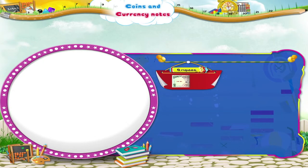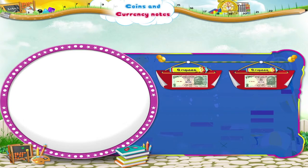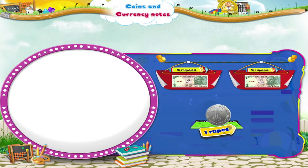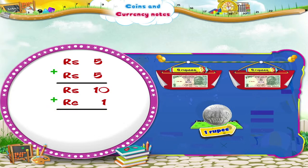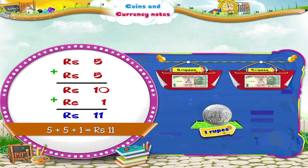Now look at this combination. We have 2 five-rupee notes and 1 coin, a 1 rupee coin. 5 rupees plus 5 rupees equals 10 rupees. 10 rupees plus 1 rupee equals 11 rupees. So, 5 plus 5 plus 1 equals 11 rupees.